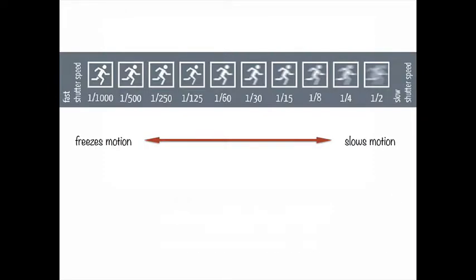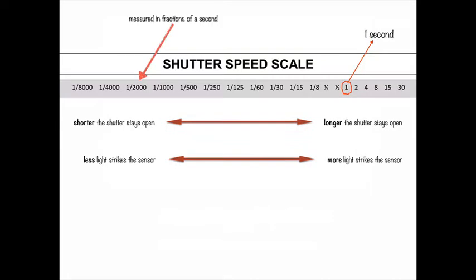Here's a shutter scale with fast shutter speeds at the left and slower shutter speeds at the right. As we said before, faster shutter speeds freeze motion and slower shutter speeds blur the motion. Here's a detailed shutter speed scale.